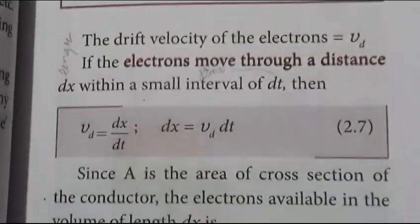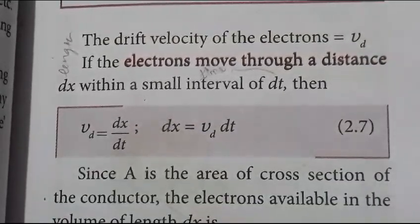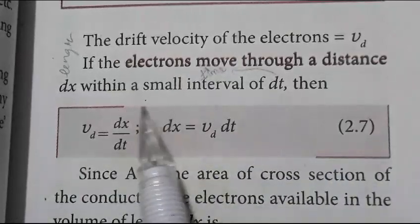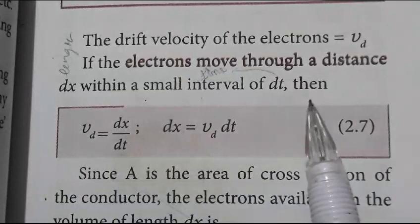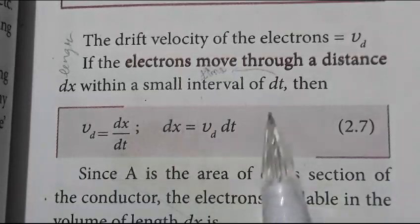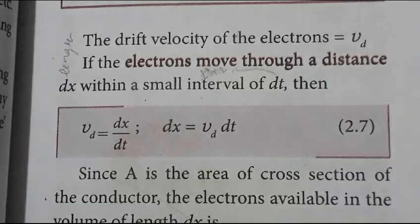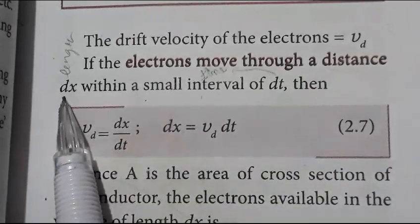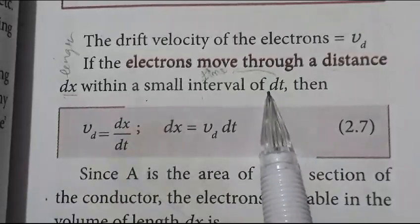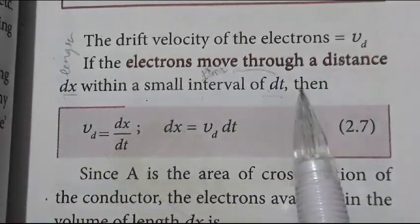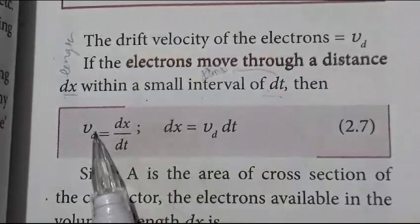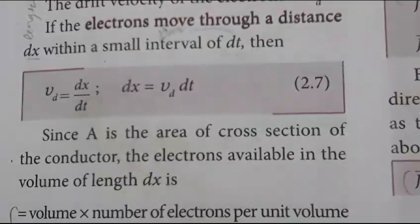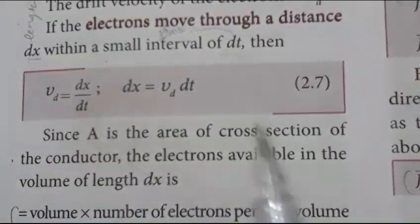The drift velocity of the electrons is vd. If the electrons move through a distance dx within a small interval of time dt, then the drift velocity vd is equal to dx by dt, so dx equals vd multiplied by dt.